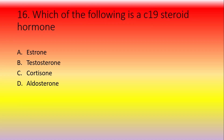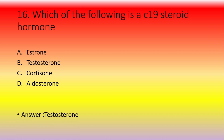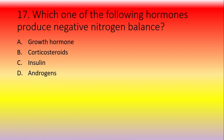Which of the following is a C-19 steroid hormone? Option A: estrone, option B: testosterone, option C: cortisone, option D: aldosterone. The answer is testosterone.